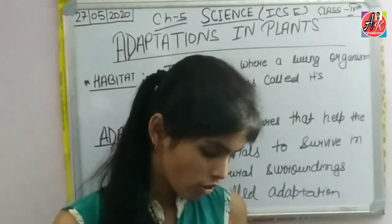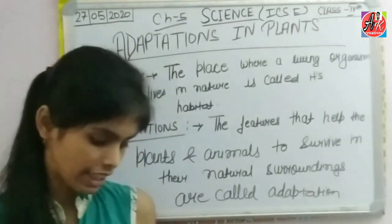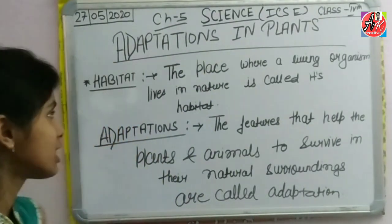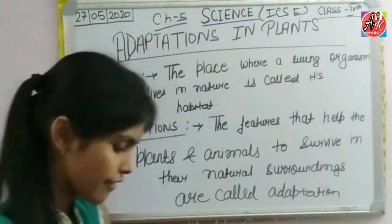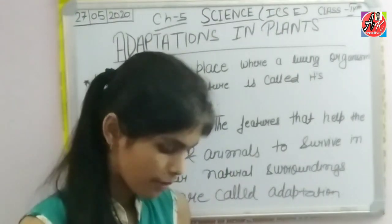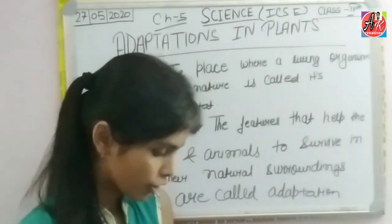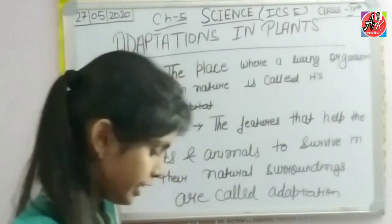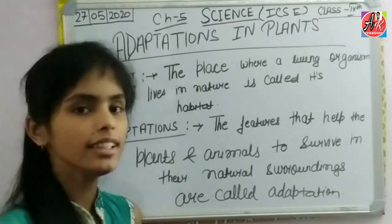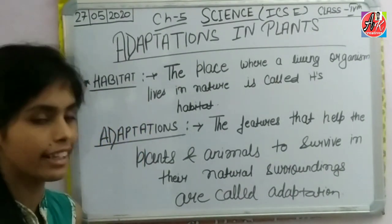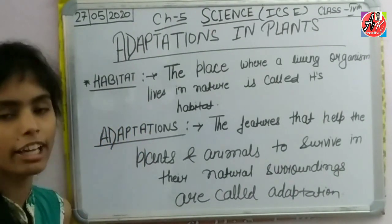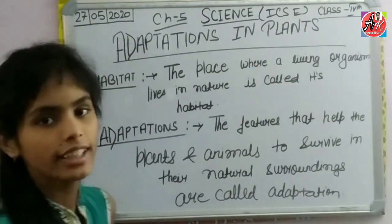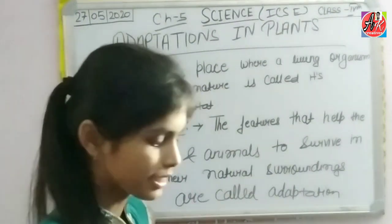As we know, plants survive in different habitats. We know that plants can survive in many habitats. Based on their habitats, plants can be divided into two categories: terrestrial and aquatic. Terrestrial plants grow on land, and aquatic plants grow in water.